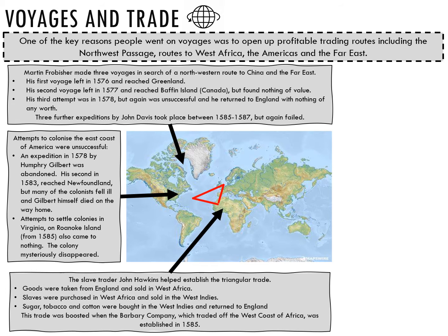The slave trader John Hawkins helped establish the triangular trade, which involved selling goods in West Africa such as rum, textiles and manufactured goods; purchasing enslaved people in West Africa and selling them in the West Indies; and then buying sugar, tobacco and cotton in the West Indies and returning to England. This trade was further strengthened when the Barbary Company, which traded off the west coast of Africa, was established in 1585.